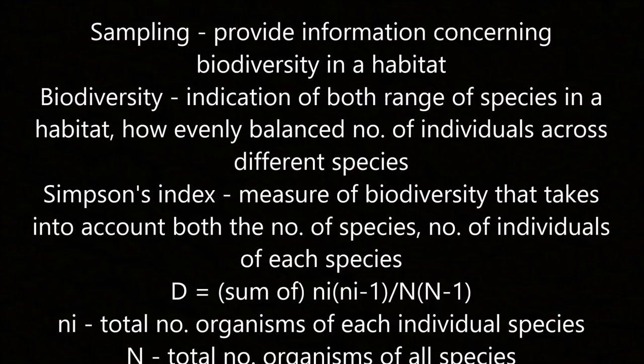Biodiversity: sampling provides information concerning biodiversity in a habitat. Biodiversity indicates both the range of species and how evenly balanced the number of individuals is across different species. Simpson's index measures biodiversity taking into account both number of species and number of individuals per species. It is calculated as D = Σ[nᵢ(nᵢ−1)] / [N(N−1)], where nᵢ is the total number of organisms of each individual species and N is the total number of organisms of all species.